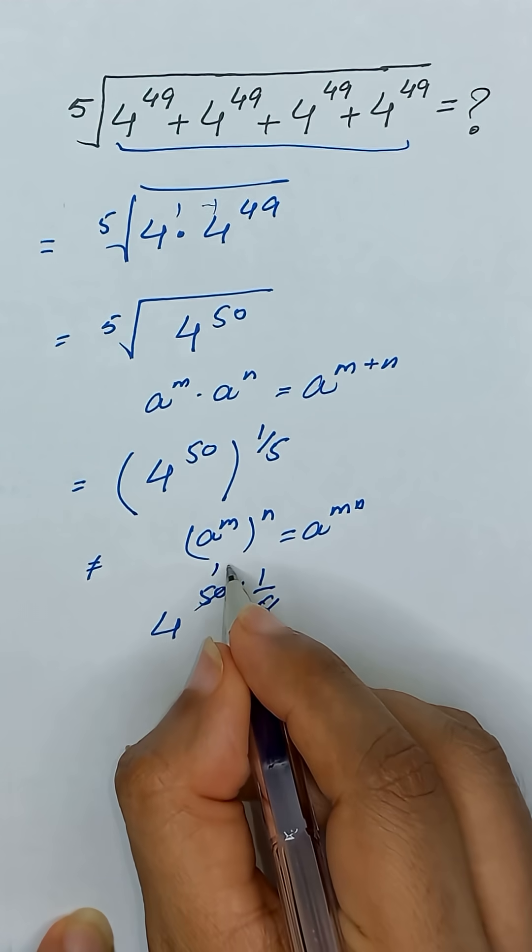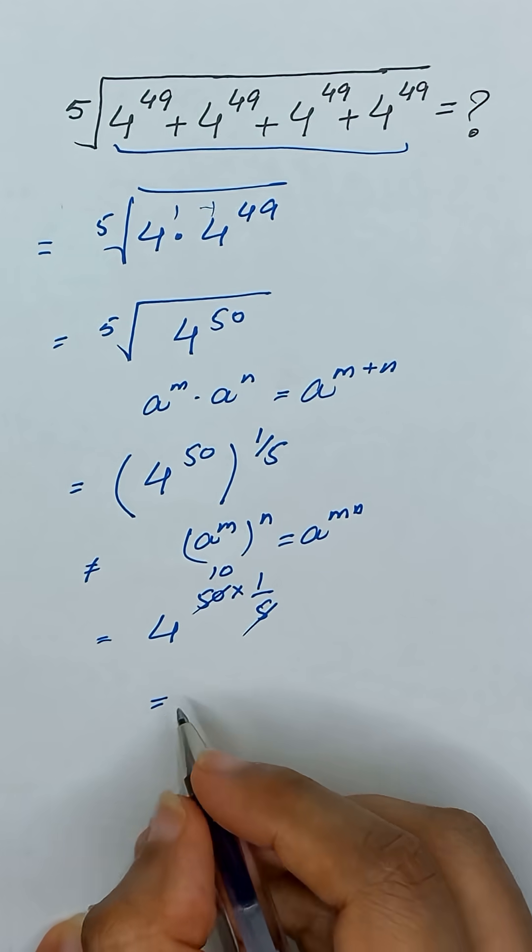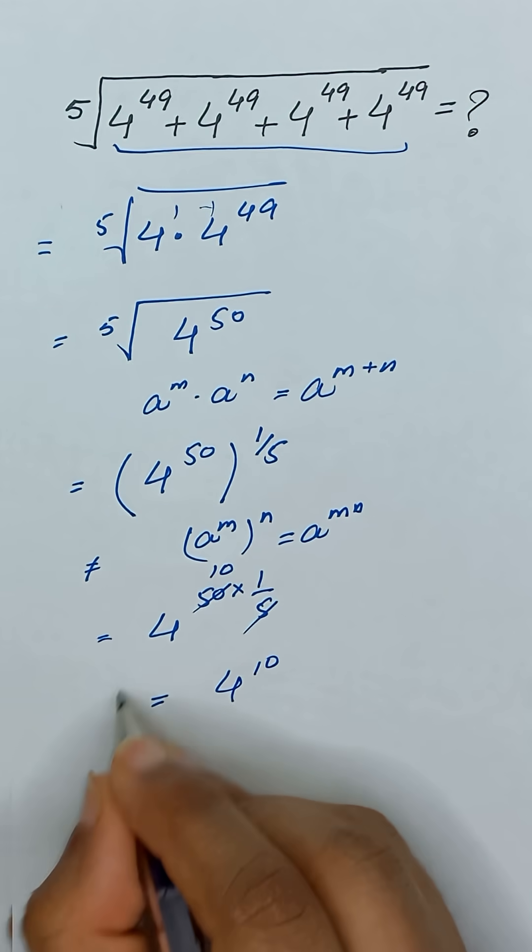So 50 times 1 divided by 5 equals 10. So it will be equal to 4 to the power 10. Thanks for watching.